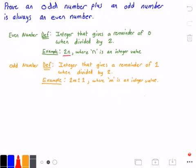Next, in orange right below it, I have the definition of what it means for a number to be odd. An odd number is an integer that gives a remainder of 1 when divided by 2. An example of this is 2 times m plus 1, where m is some arbitrary integer value.